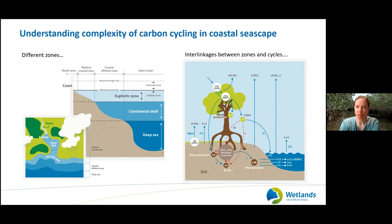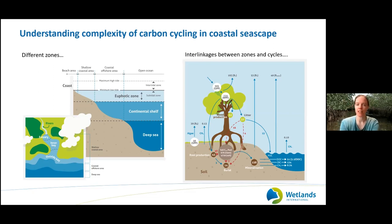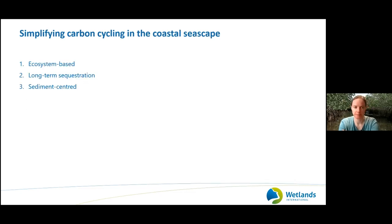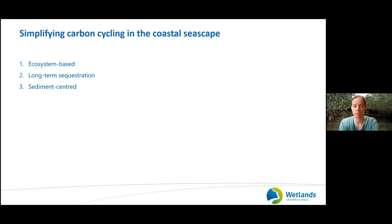First, understanding the complexity of the coastal carbon seascape. There are different zones — the shallow coastal area, the coastal offshore area, and the open ocean — with interlinkages between these zones and also between cycles within them, not only the carbon cycle but also the nutrient cycle. To simplify, we focus on the ecosystem processes of sequestering, decomposing, and storing carbon. The second step is to focus on long-term sequestration, which leads to a focus on sediment, since stable forms of carbon are stored in sediments.